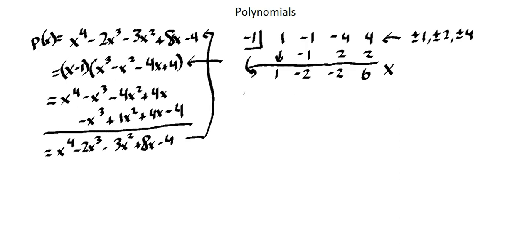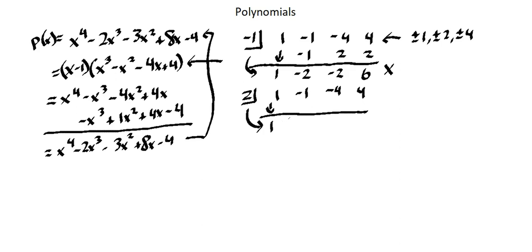Let's try 2. I'm evaluating the factor of x minus 2. My coefficients are 1, negative 1, negative 4, and 4. I bring my first coefficient down and begin multiplication: 2 times 1 is 2; negative 1 plus 2 is 1; 2 times 1 is 2; negative 4 plus 2 is negative 2; 2 times negative 2 is negative 4; and 4 plus negative 4 is 0. So 2 is one of my zeros and x minus 2 is a factor.